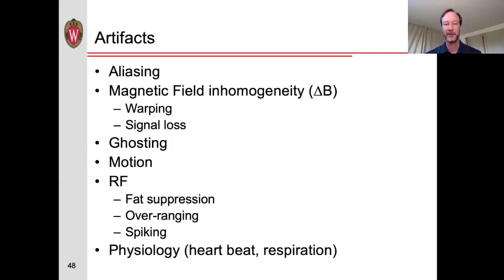We'll be covering a number of different artifacts, such as aliasing, magnetic field inhomogeneities which can cause either warp or signal loss, ghosting, motion, artifacts related to the radiofrequency or RF pulse, which could be fat suppression, overranging, or spiking, and finally looking at some effects of physiology, specifically the heartbeat and respiration.